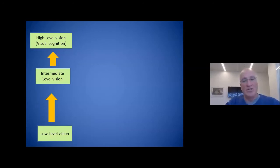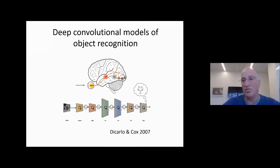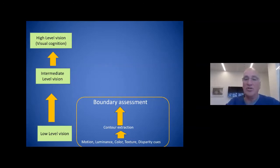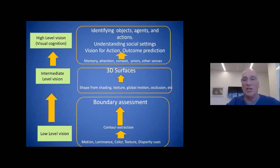One can think about processing done in terms of low-level vision, moving on to intermediate-level vision and to high-level vision, or what's called visual cognition. At the low levels, you have multiple cues — motion, luminance, color, texture, disparity — which are used to extract contours and assess boundaries. At intermediate level vision, more sophisticated cues extract 3D surfaces such as shape from shading, global motion, and occlusion. At the high level, one identifies objects or agents, actions, and understands social settings, using vision for action and predicting outcomes using memory, attention, context, and priors, and also integration with other senses.